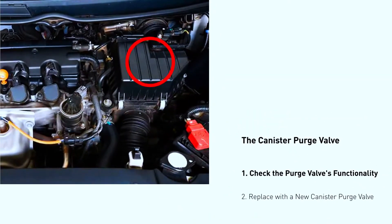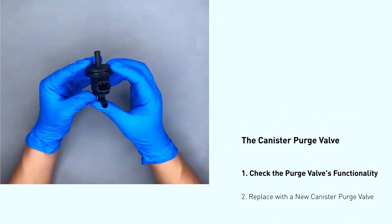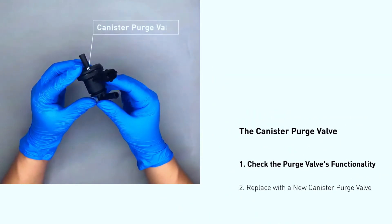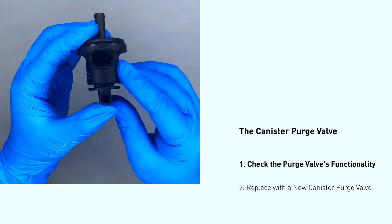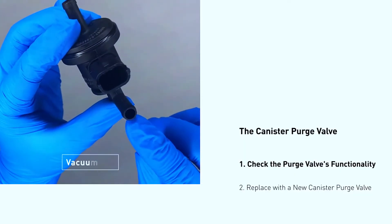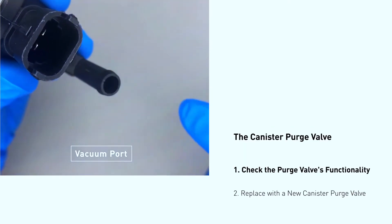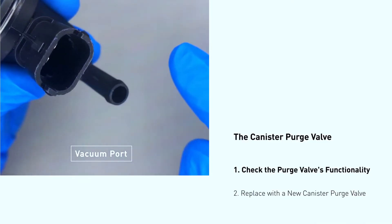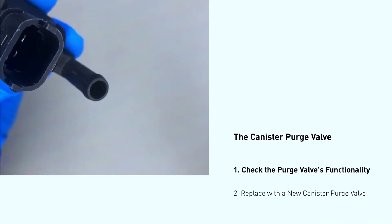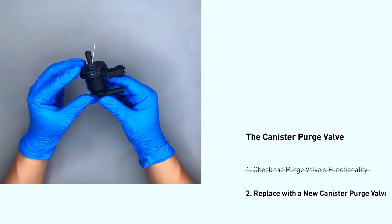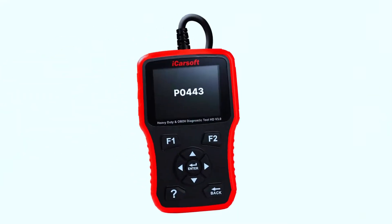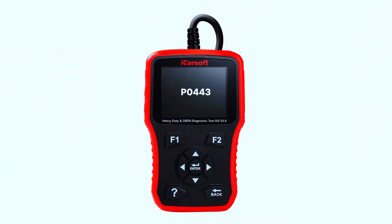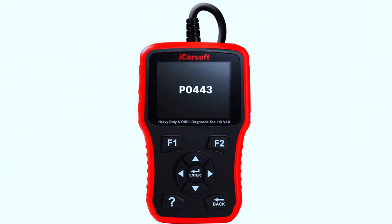Replacing the purge valve: locate it — it's usually near the engine intake manifold. Disconnect the electrical connector and any vacuum lines, then unscrew and remove the old purge valve. Install the new purge valve, reconnect everything, and clear the trouble code with your OBD2 scanner.